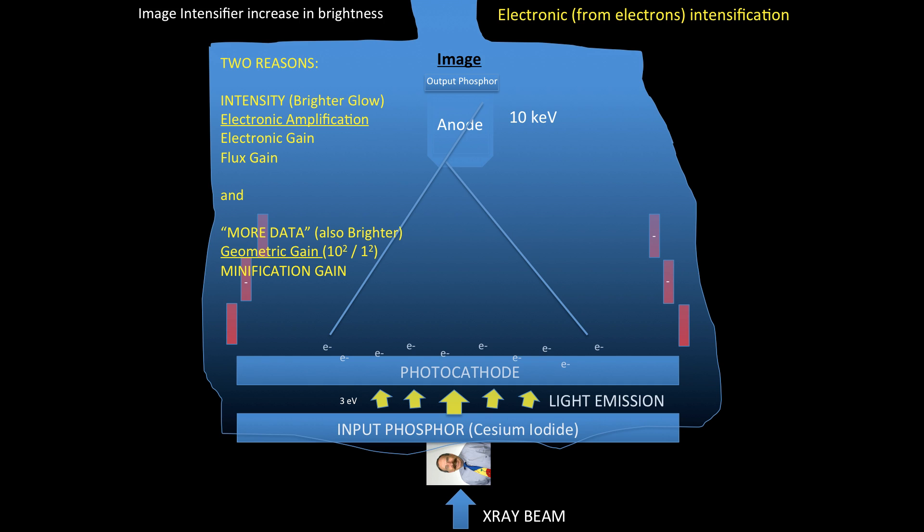And then you have the second component, that's more data. What I mean by that is that you have the data from the input phosphor, which let's say we have a 10 inch input phosphor. Then that's displayed at our output phosphor, which can be a 1 inch output phosphor. And that creates the effect that we have the same amount of data now in a smaller space, and that creates that minification gain or that increase in brightness.